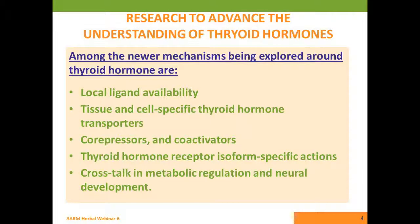Some of the research is looking at the following mechanisms pertinent to thyroid hormone. For one, local ligand availability. What this refers to is you might do blood tests and find normal TSH, normal T3, and normal T4 in the serum or blood, but what's really going on in the local tissues might be another story altogether. What actually reaches cell receptors or nuclear receptors, or what's able to bind or act as an agonist downstream, might be different than what's available in the blood. So doing different ligand studies in tissues.